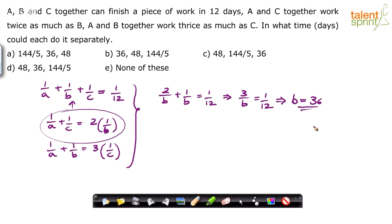Now first I would say is eliminate the options. Because in what time could each do it separately? Obviously they will be giving number of days by A, B and C in that order. So B should be 36. Here it is 48, so wrong. Here it is 144/5, so wrong. Here 36 possible. So option A and D are possible.